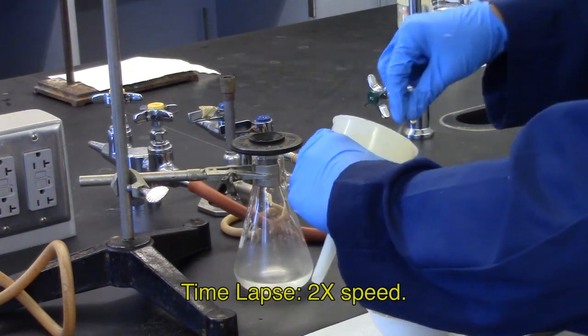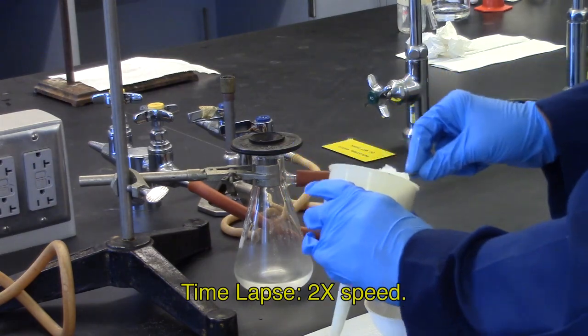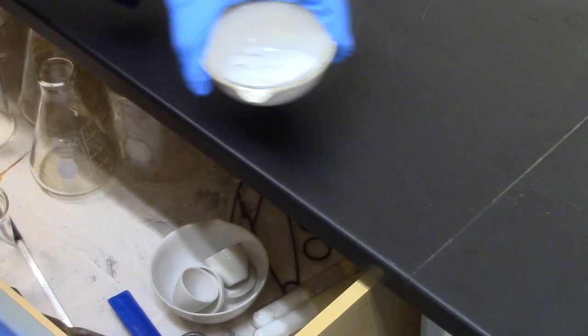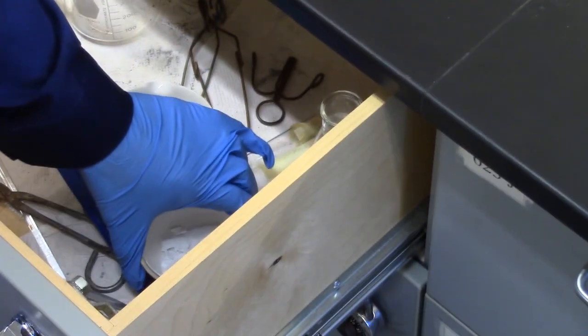To do parts B and C, you will need about 1 gram of product. Store your sodium hydrogen carbonate in a beaker or evaporating dish in a safe place in your locker.